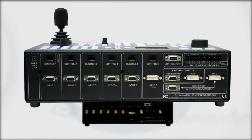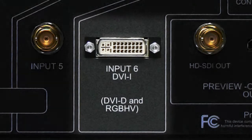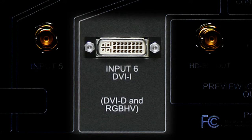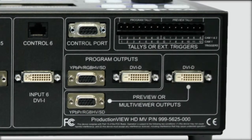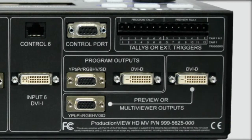The HD version has five analog inputs that will accept SD, HD component, and RGBHV signals for resolutions up to 1080p. The sixth input on both systems has a DVI-I input capable of either analog or digital signals, including HD component, RGBHV, DVI-D, or HDMI. The outputs available on the ProductionVue HD are analog SD, or HD component, and a DVI-D output.